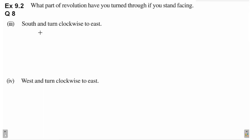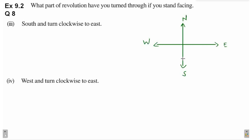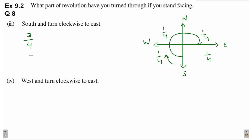Third part hai south and turn clockwise to east. This is north, this is east, this is south, this is west. Currently south par hai, clockwise humne turn karna hai. And clockwise turn karte hue humne east tak jaana hai. Every part is one by four. And humne kitne parts cover kiye yahan par? One part, two part and three part. So answer kya aa jaayega? Three by four parts of revolution.